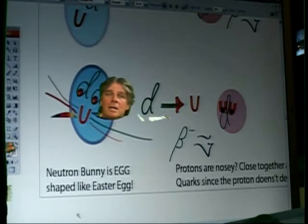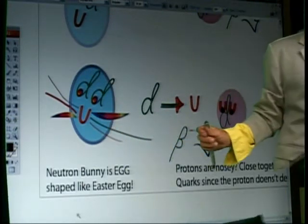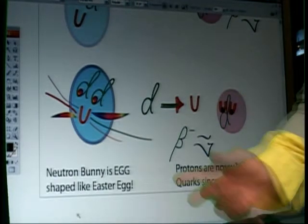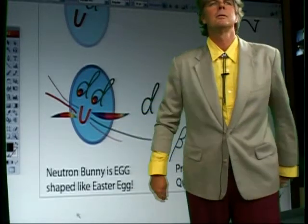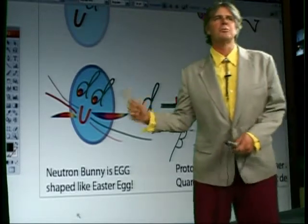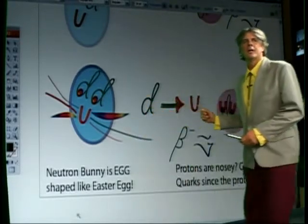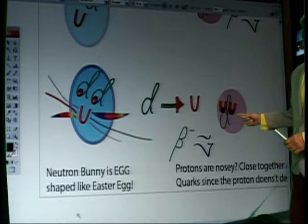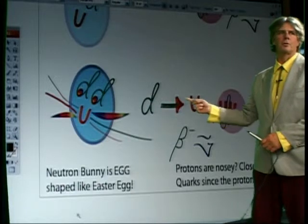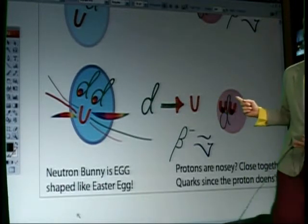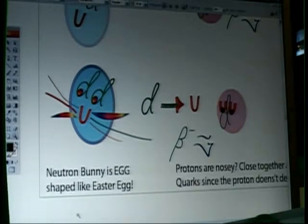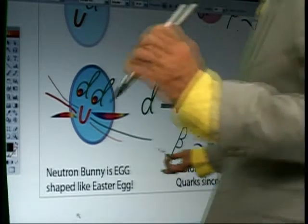A neutron bunny. We're just being ridiculous now, aren't we? So anyway, see how much more colorful it is. Neutron bunny's bigger than the proton. The down quark should probably be drawn bigger because the down is more massive than the up. Beta, anti-neutrino — you get a positron; it's going to be a neutrino.